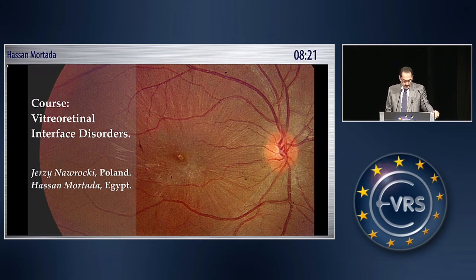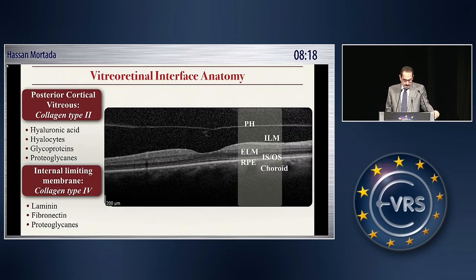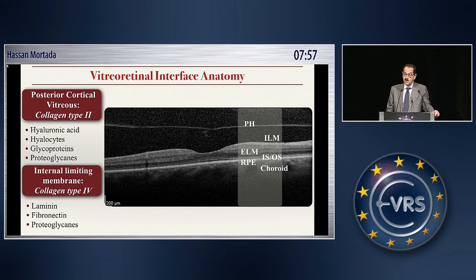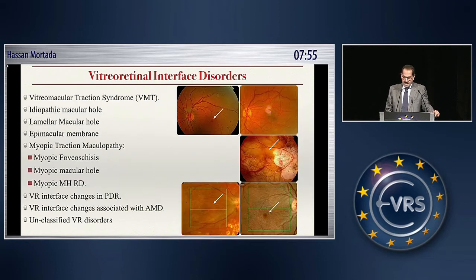Our course will begin with a reminder of the vitreoretinal interface anatomy, which is the junction between the posterior hyaloid and the internal limiting membrane. The posterior cortical vitreous is made of collagen type 2, and the internal limiting membrane is made of collagen type 4, and this is important regarding the staining properties.